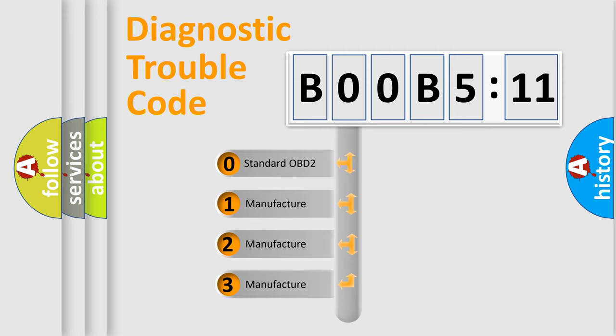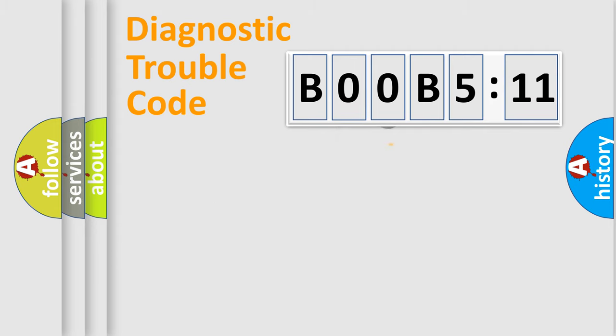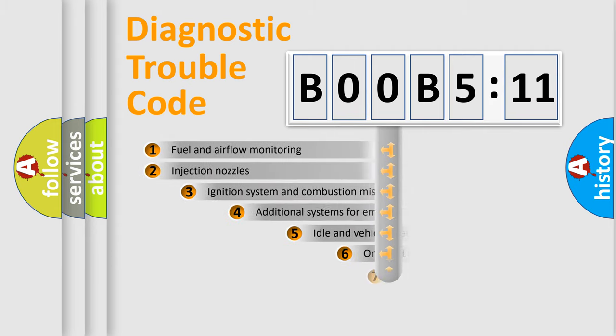If the second character is expressed as zero, it is a standardized error. In the case of numbers 1, 2, or 3, it is a more precise expression of a car-specific error.